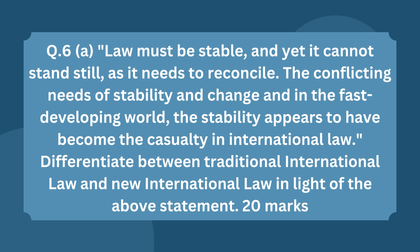Question number 6 presents a statement: 'Law must be stable and yet it cannot stand still; it needs to reconcile the conflicting needs of stability and change, and stability appears to have become the casualty in international law.' Differentiate between traditional and new international law. Traditional international law was based on customary laws, was purely state-centric, and had limited scope. The new international law is based on treaties and conventions, has scope beyond the state, and focuses on individuals and organizations.